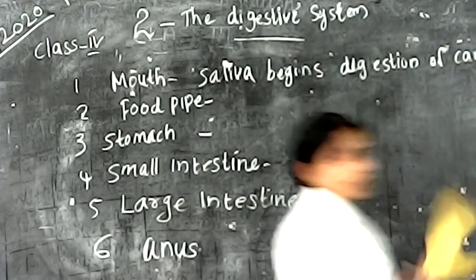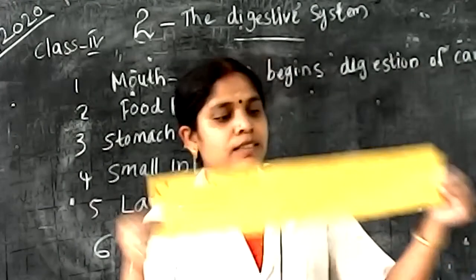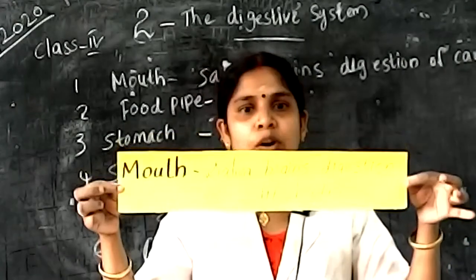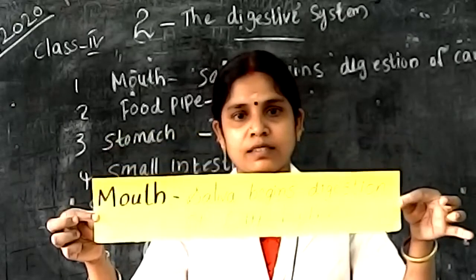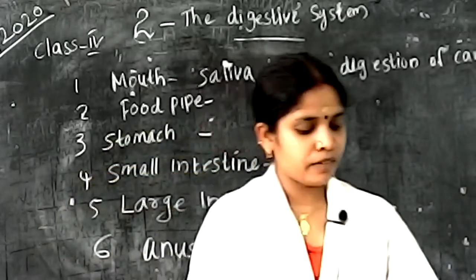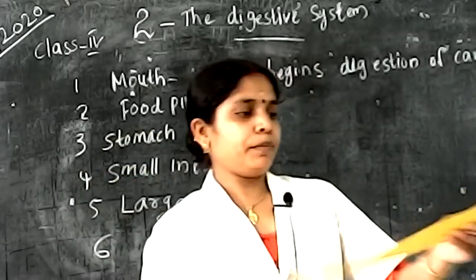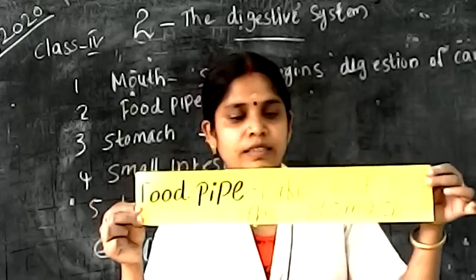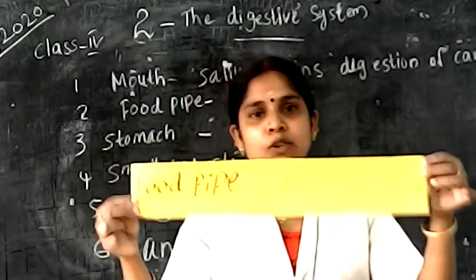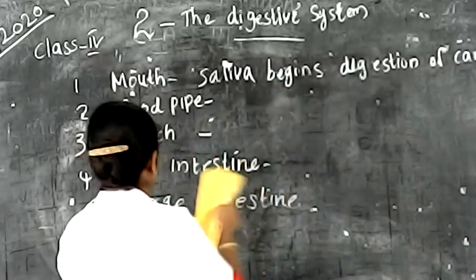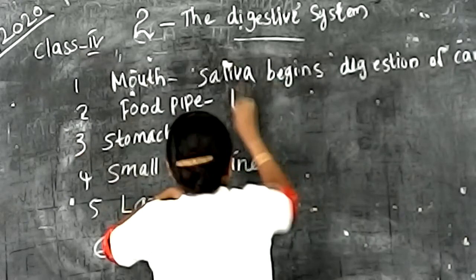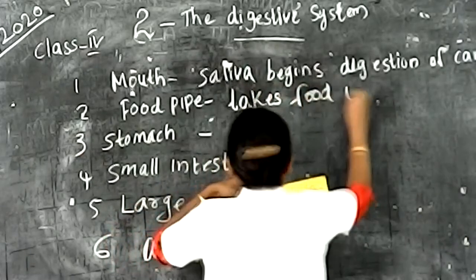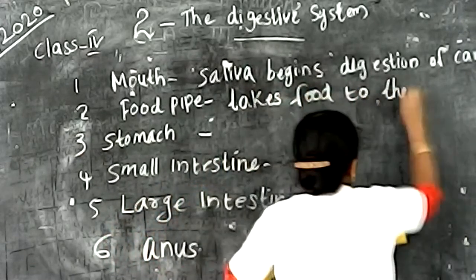First one, mouth: saliva begins digestion of carbohydrates. Second one, food pipe: takes food to the stomach.